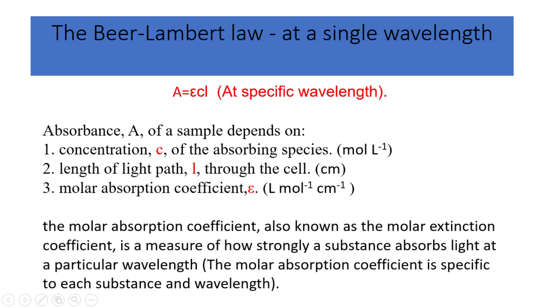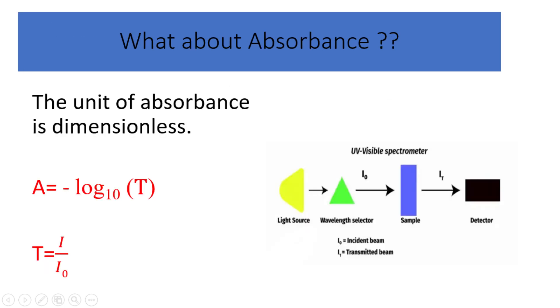But what about absorbance A? The unit of absorbance is dimensionless, meaning it has no specific unit associated with it. Absorbance is a logarithmic measure of the amount of light absorbed by a sample, and it is expressed on a logarithmic scale. It also can be calculated using the equation A equals negative log base 10 of T where T denotes the transmittance, which is the ratio of the intensity of transmitted light to the intensity of incident light.